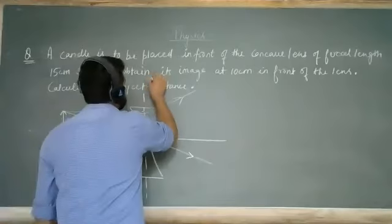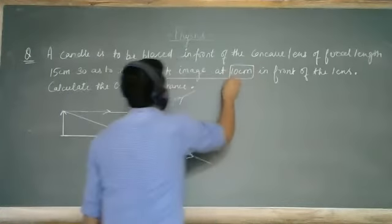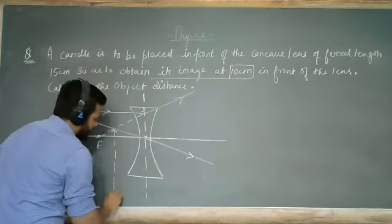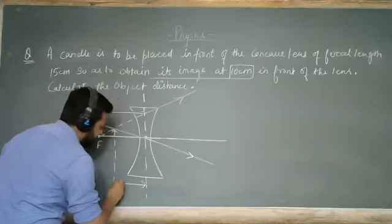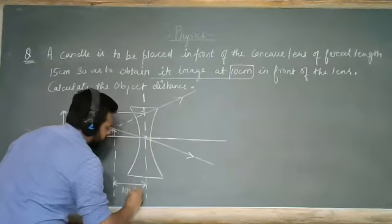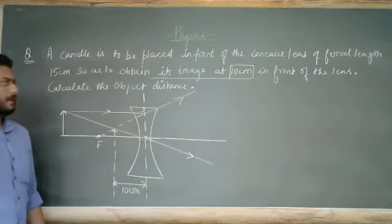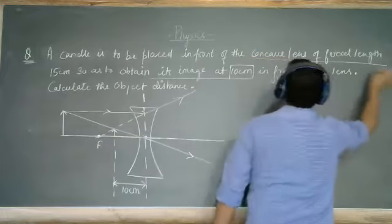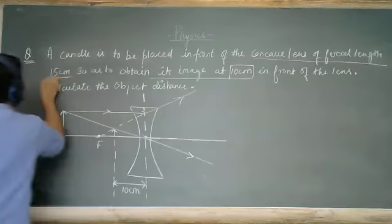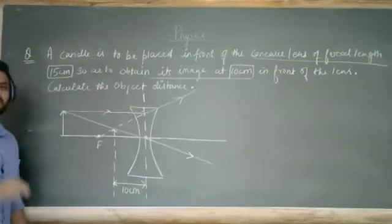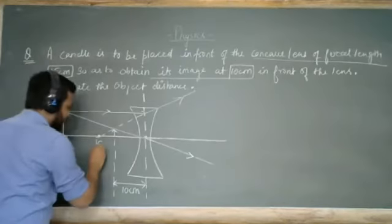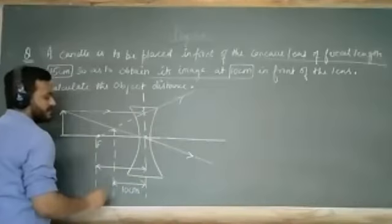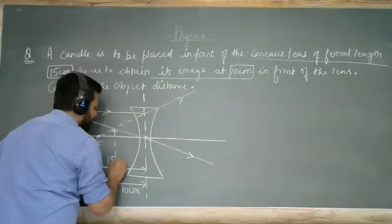The question states that the image is obtained at 10 cm in front of the lens, so the image distance is 10 cm before the lens. The focal length is also provided in the question — the concave lens has a focal length of 15 cm.